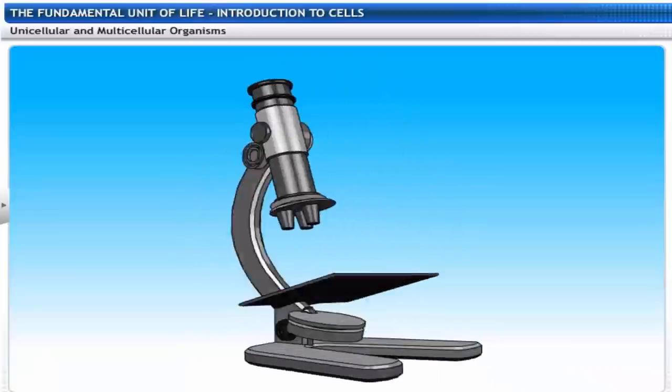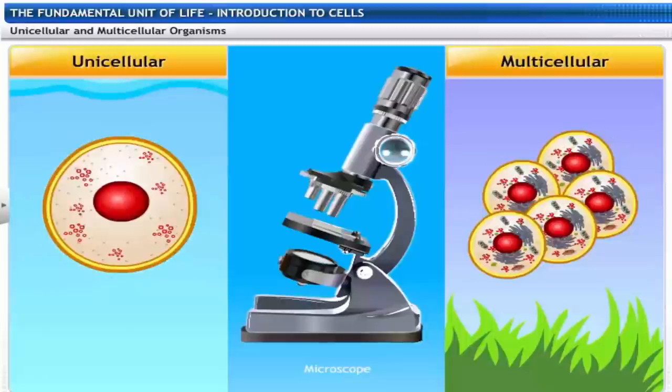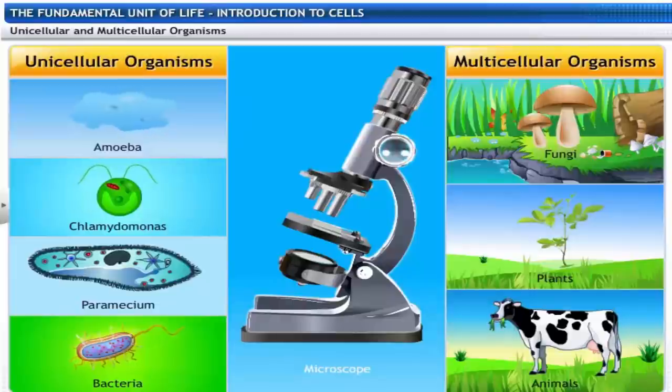The development of the microscope led to the discovery of single and multiple-celled organisms. Organisms like amoeba, chlamydomonas, paramecium and bacteria have single cells, which constitute the whole organism. These organisms are called unicellular organisms.